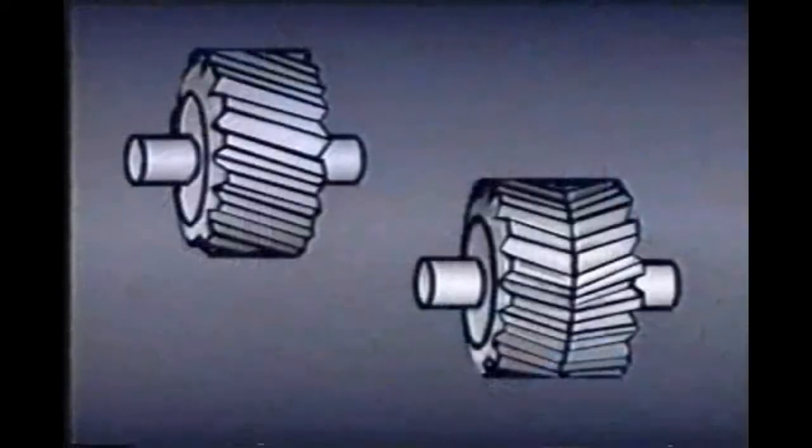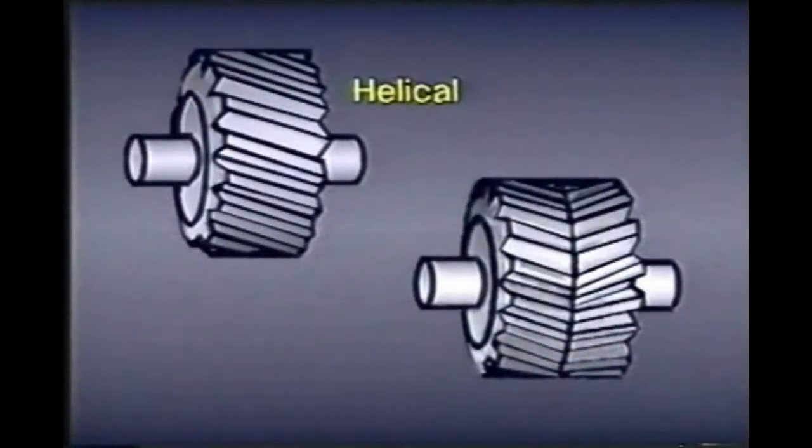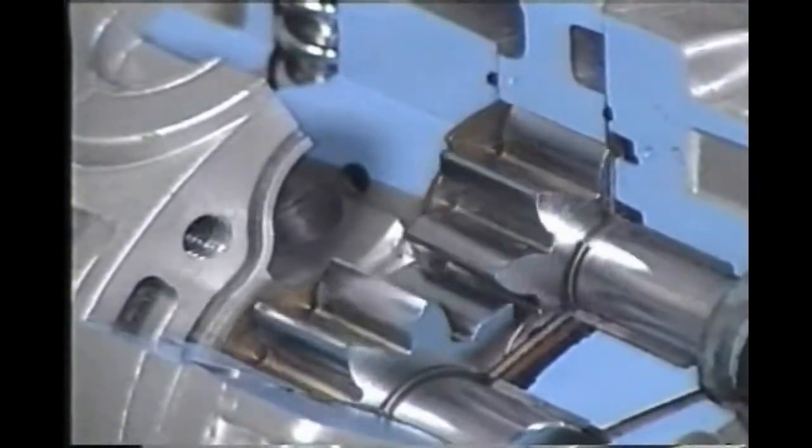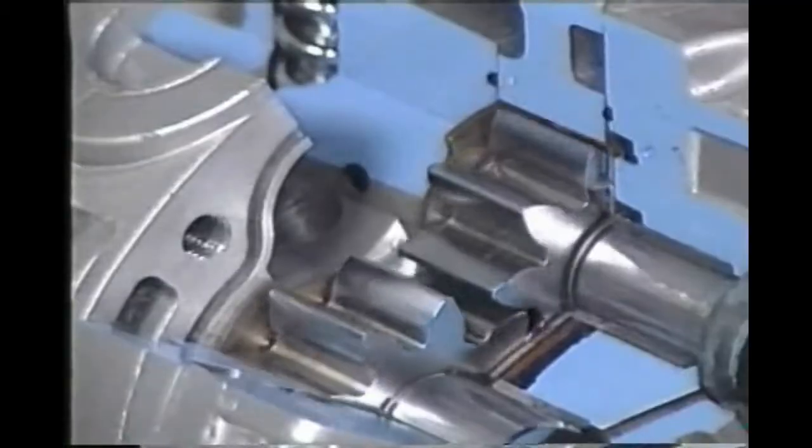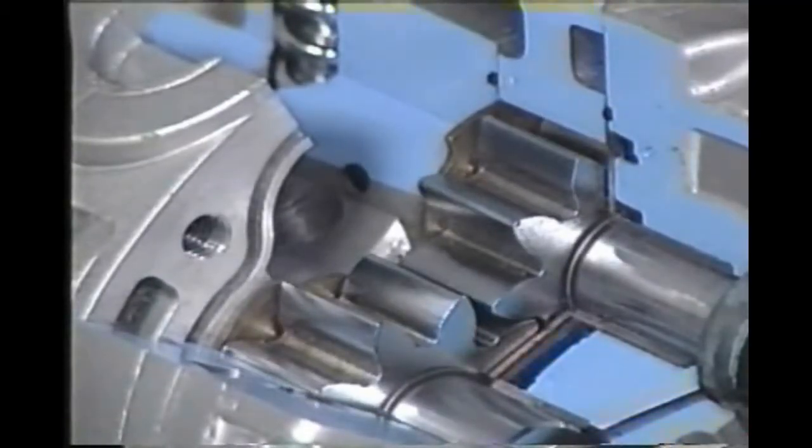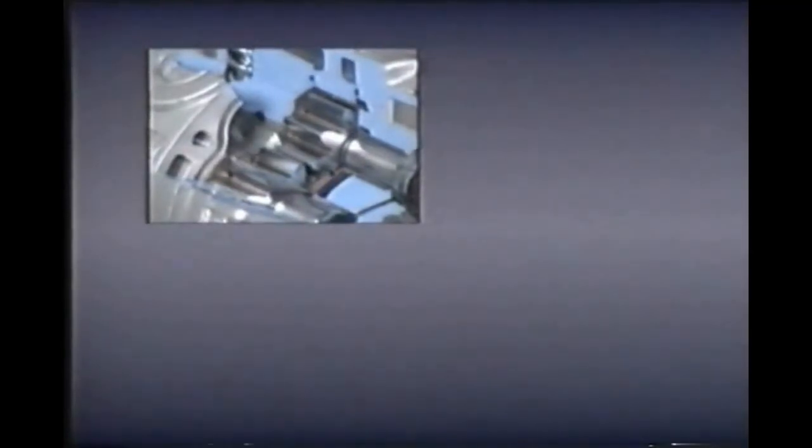External gear pumps are also built with helical gears and with herringbone gears. The principle of operation is the same: moving gears take fluid from the inlet port, carry it around the housing, and discharge it at the outlet port. External gear pumps are sometimes called gear-on-gear pumps.